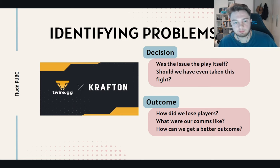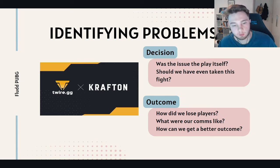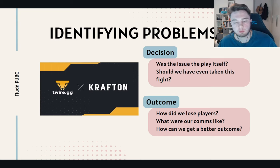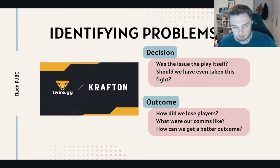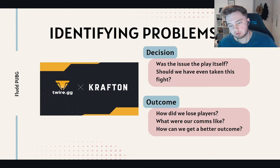When we're reviewing as a team, we need to separate our VOD review into two categories. First, we have the decision — was it the right one from a third-party perspective? Taking a step back, was the play we committed to the right one? Should we have even taken that fight? That's the macro question. Then once we've discussed whether it was even the right thing to do, we can move on to the outcome.